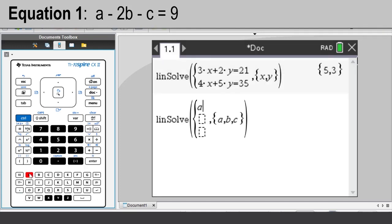The first equation is A subtract 2B subtract C equals 9. Press the down arrow to move to the next field and enter the second equation.